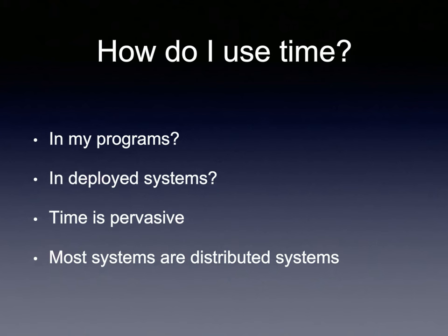In software today, time is a pervasive issue in any data center. Financial applications interacting with stock or currency markets need to be well synchronized, because the timestamp is how you determine who got something done at a particular moment. One way to think about time in distributed systems is: we're trying to answer the question 'who did what to whom, and when?'